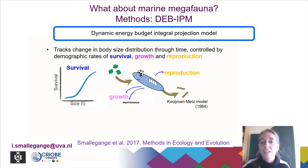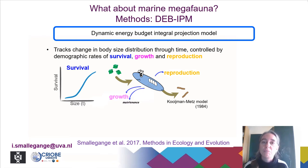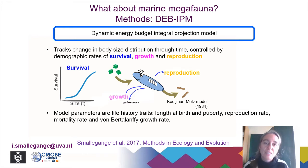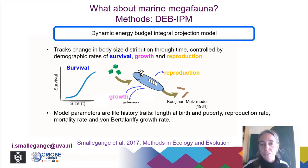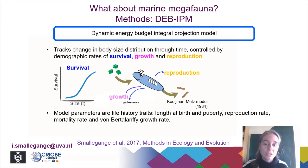What you see here in this schematic is that an individual ingests food. The food available is allocated to growth and maintenance, and any energy that is left is then funneled into reproduction. What is key about the dynamic energy budget integral projection model is that the model parameters are not statistical coefficients but life history traits. So the model takes as input parameters: length at birth, length at puberty, reproduction rate, mortality rate, and the von Bertalanffy growth rate.